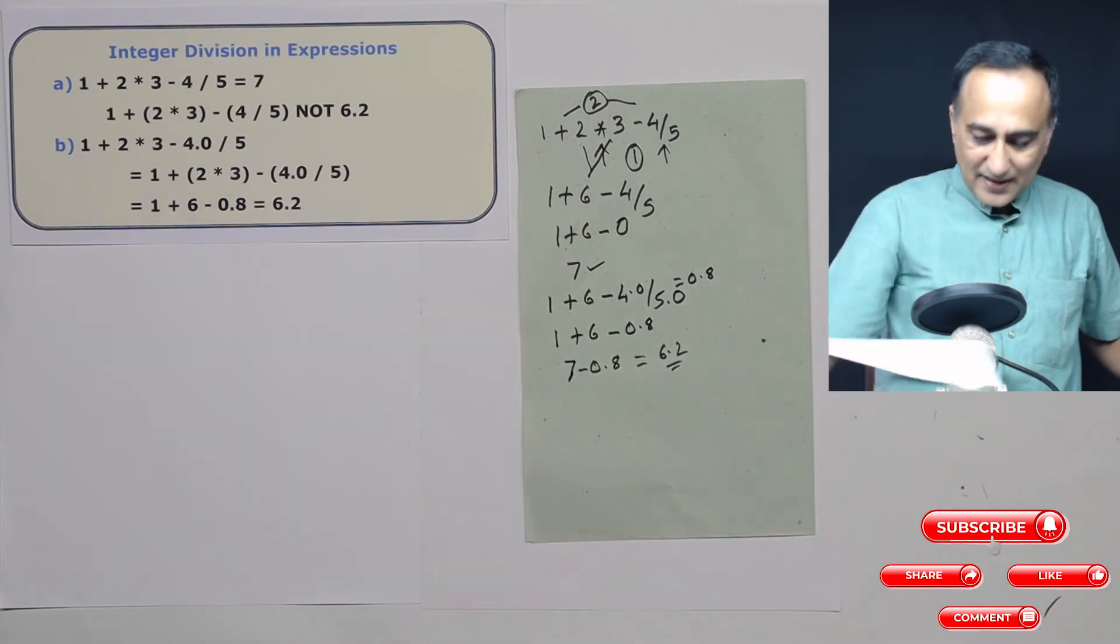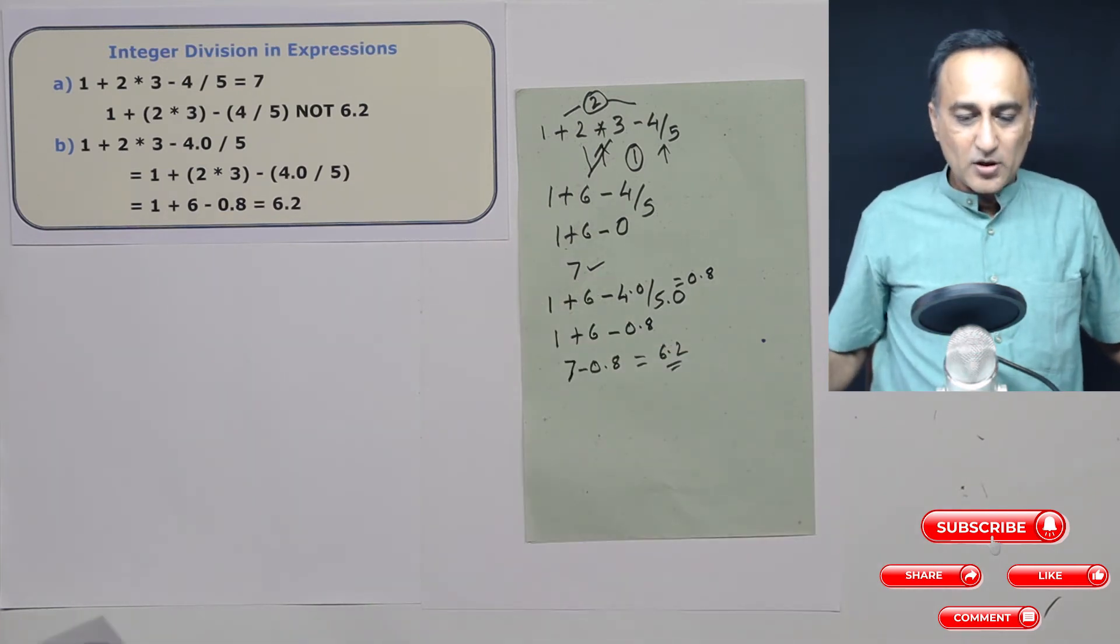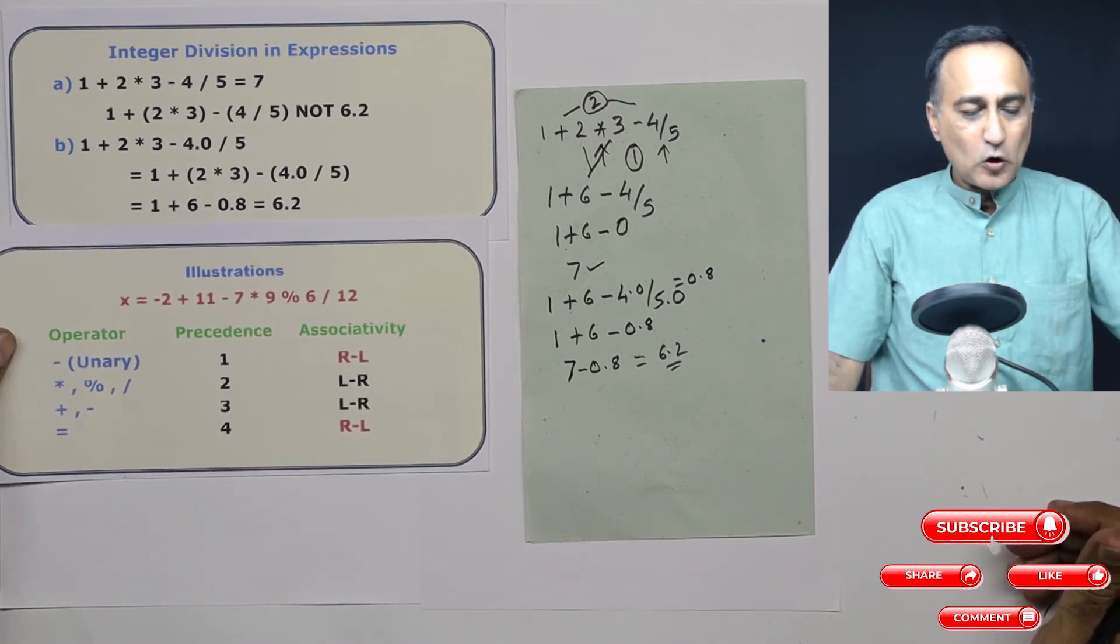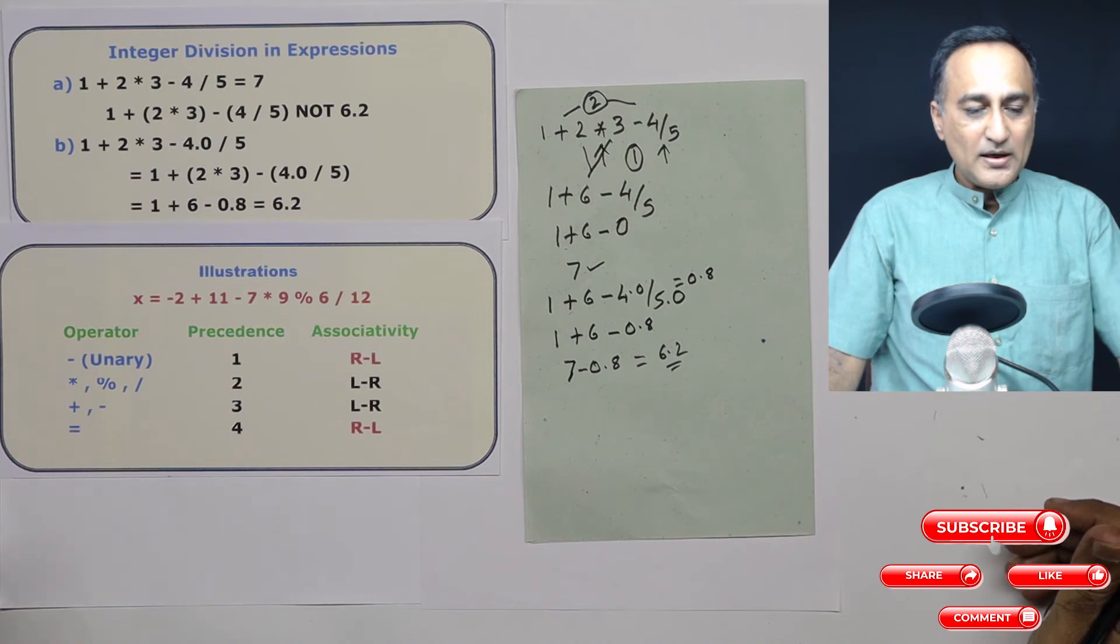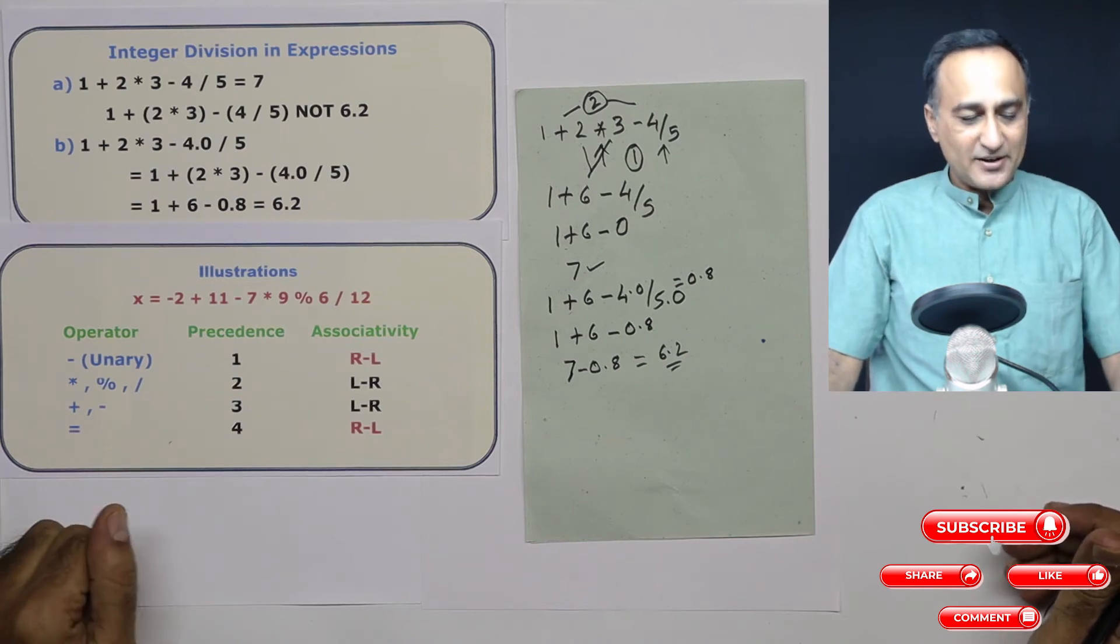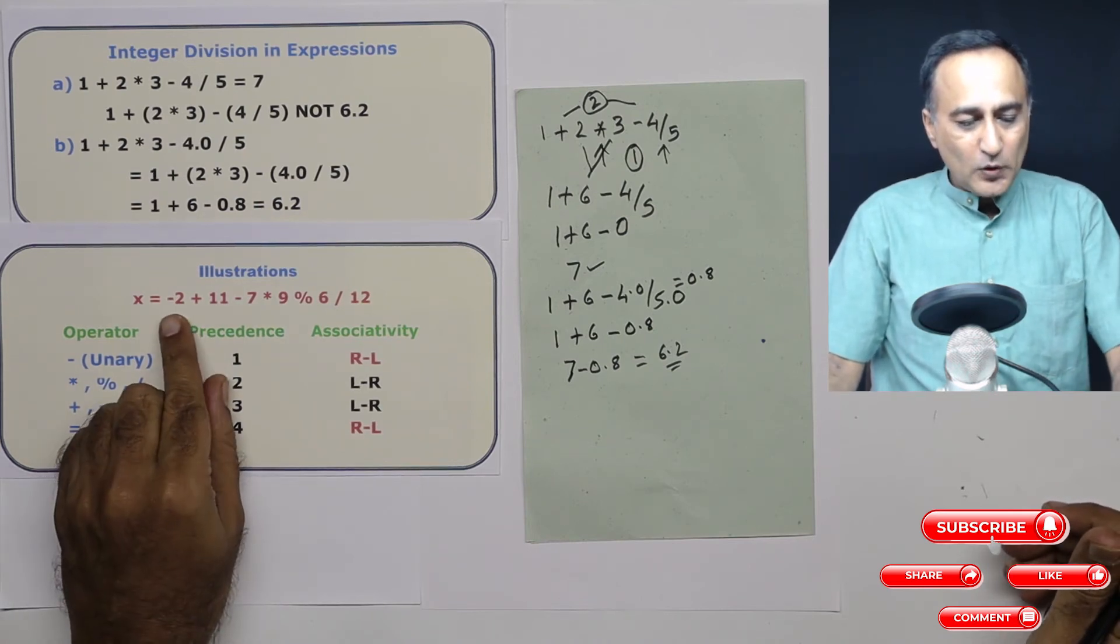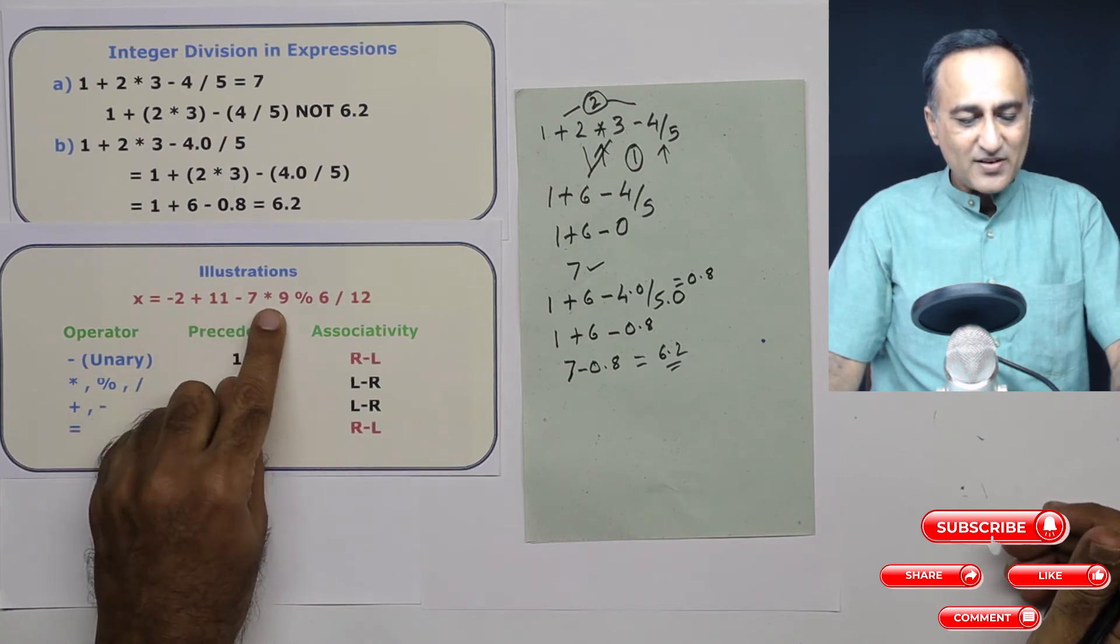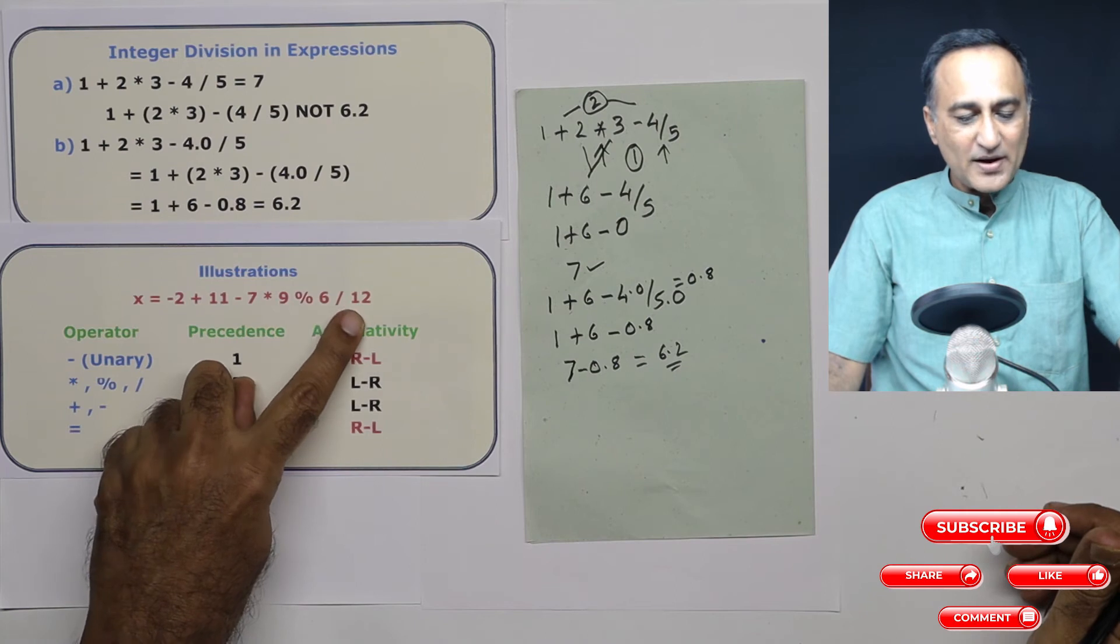Now let's take a look at another expression to give you a little more clarity on how the priority of the operators or the precedence of the operators and how associativity is determined. So if you look at this expression, it is minus 2 plus 11 minus 7 into 9 mod 6 divided by 12.